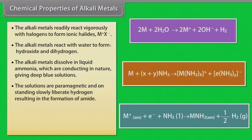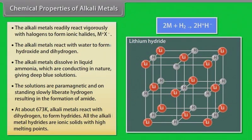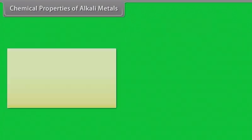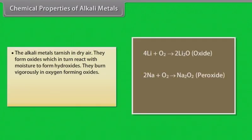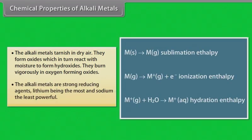At about 673 Kelvin, alkali metals react with dihydrogen to form hydrides. All the alkali metal hydrides are ionic solids with high melting points. The alkali metals tarnish in dry air; they form oxides which in turn react with moisture to form hydroxides. They burn vigorously in oxygen to form oxides. The alkali metals are strong reducing agents, lithium being the most and sodium the least powerful.